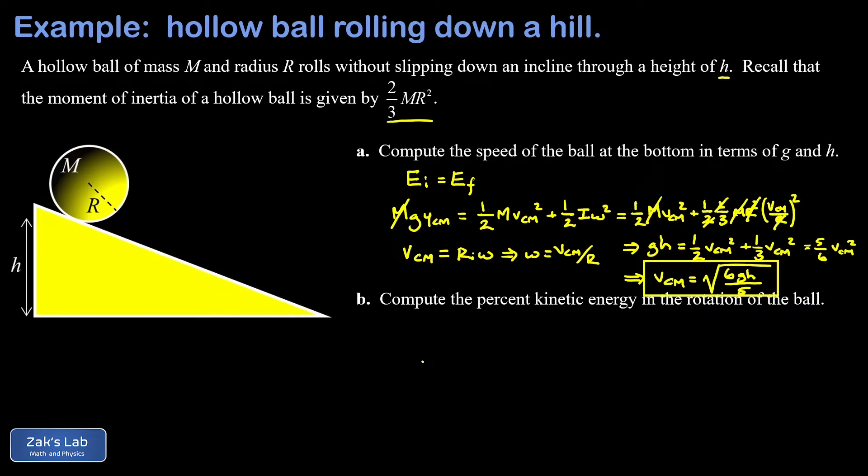Next, we're asked to compute the percentage of the kinetic energy that's in the rotation of the ball. If we go back and look at our expression for the total kinetic energy, back here, where it was one-half v squared plus one-third v squared. Remember, the first term comes from the translational piece and the second from the rotational piece.